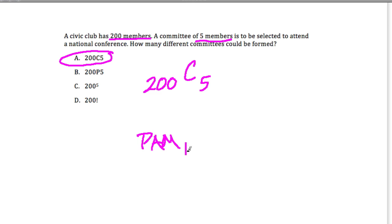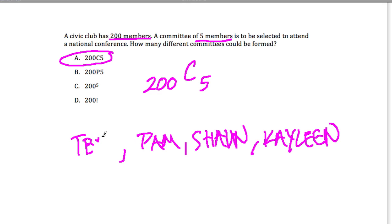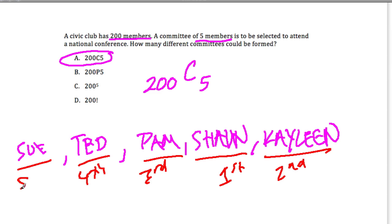Now B would be the answer if, let's say we had Sue, Ted, Pam, Sean, and Kayleen—five people. Perhaps if the order mattered, like if I elected Sean first and then Kayleen, so first and then second, and then Pam for third, and Ted fourth, and Sue fifth. Now in this scenario, it doesn't matter because they're all on the committee together.